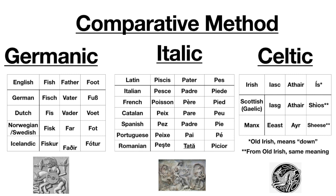In the first chart, in the Germanic column in English, we have the words fish, father, and foot. If you look at those words in the Germanic languages, they are all pronounced with 'f' sounds. In Dutch and German they're spelled with V's in some cases, but it doesn't matter because they're pronounced with 'f' sounds. Spelling is created by human beings, but the sounds are what's more important. In German we have Fisch, Vater, Fuß; in Norwegian and Swedish, fisk, far, and fot; and similar words in Dutch and Icelandic all begin with 'f' sounds.